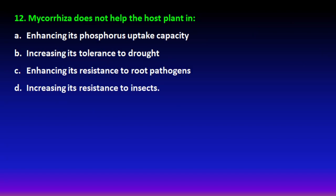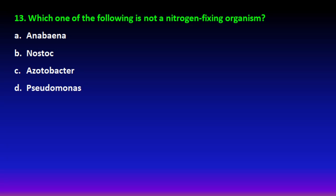Question number 12: mycorrhiza — 'myco' means fungi and 'rhiza' means roots. Mycorrhiza is the symbiotic relationship between fungi and the roots of higher plants. The question asks what it does NOT help the host plant with. It increases drought tolerance, phosphorus uptake, and resistance to root pathogens, but mycorrhiza plays no role in increasing resistance to insects. So option D is the right answer.